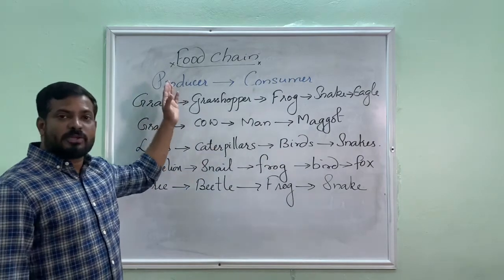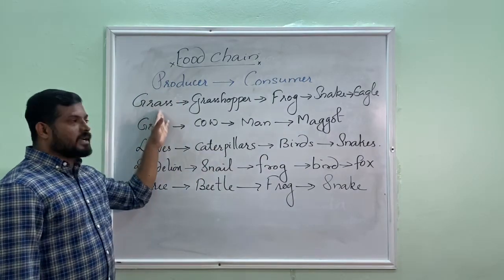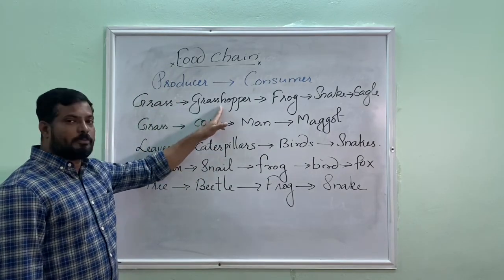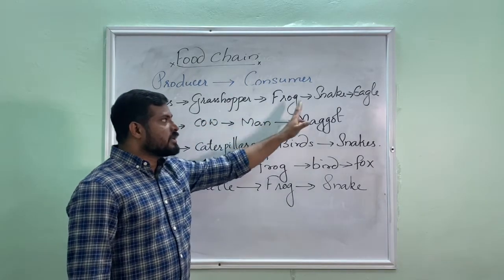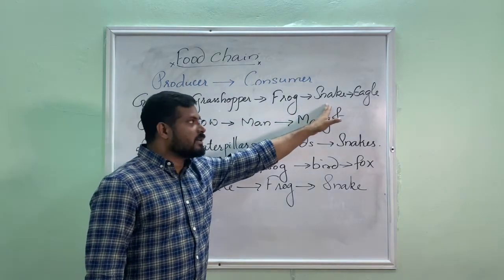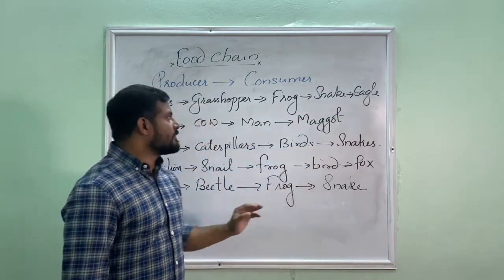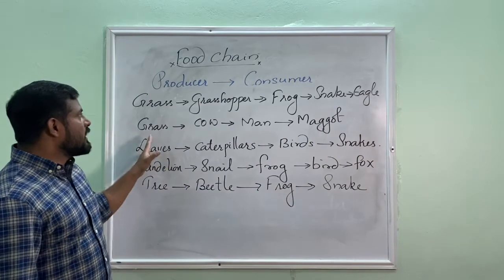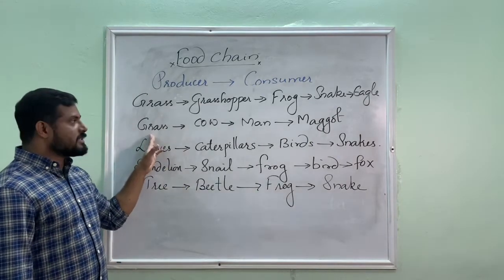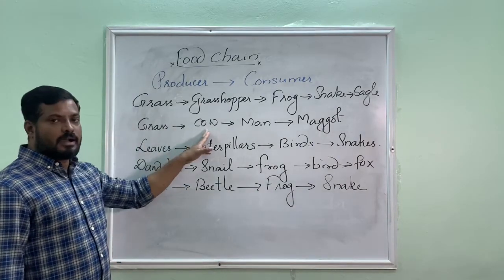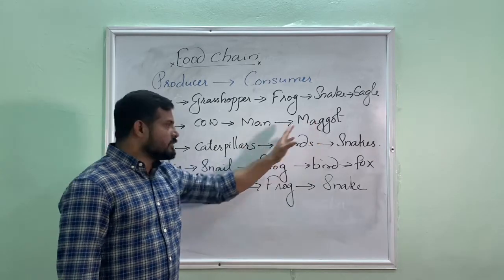Examples of food chain. First example: grass, grasshopper, frog, snake, eagle. Second example: grass, cow, man.